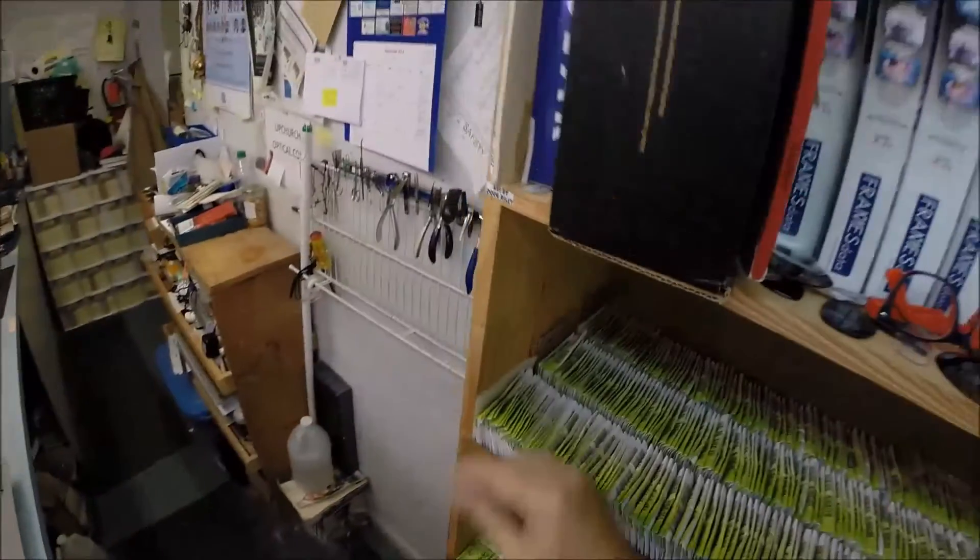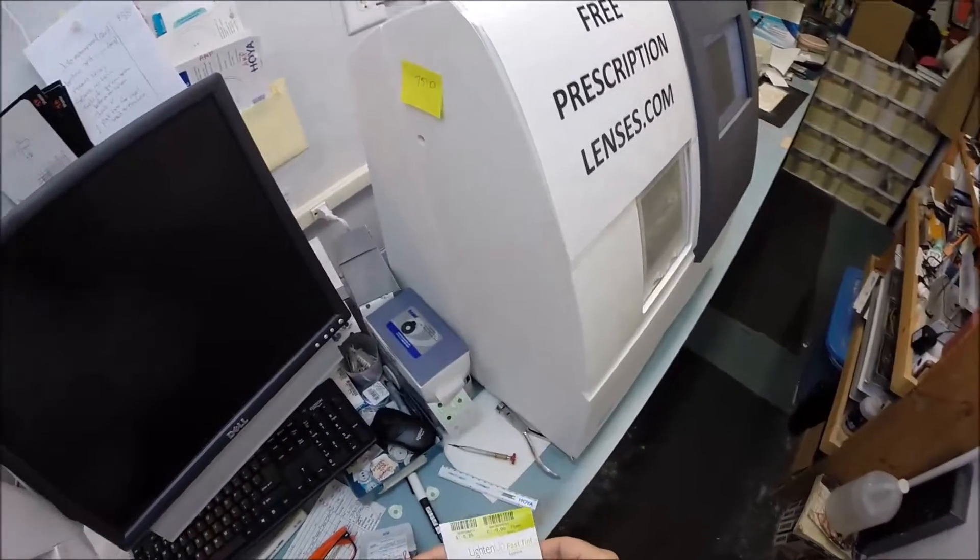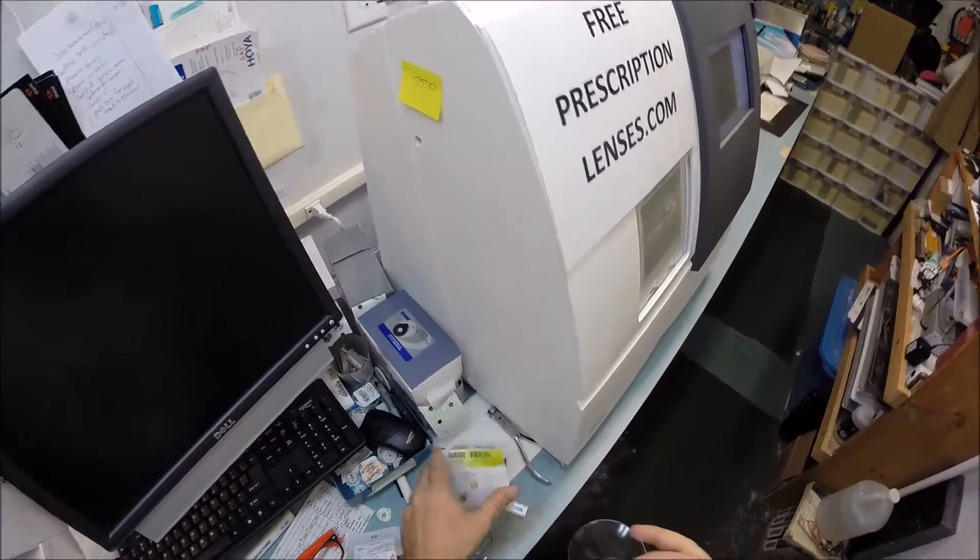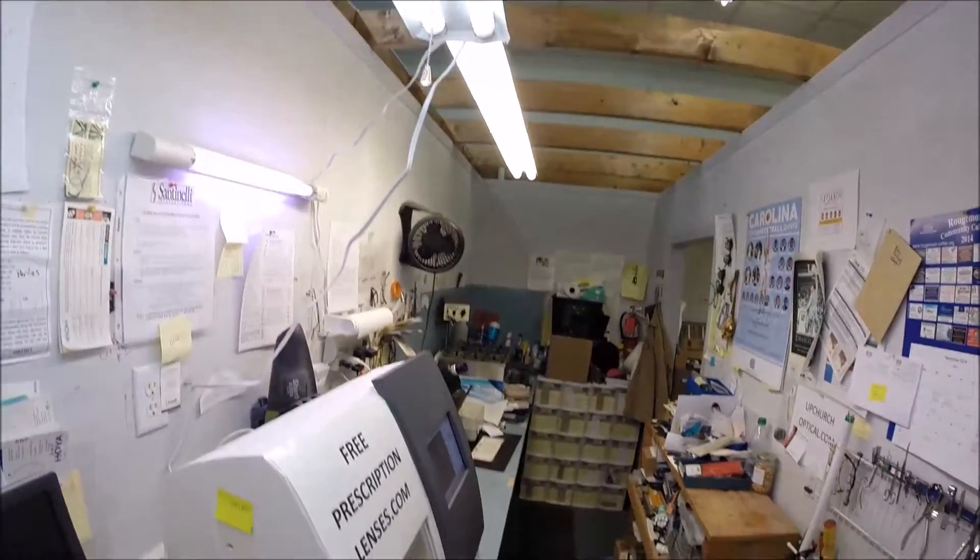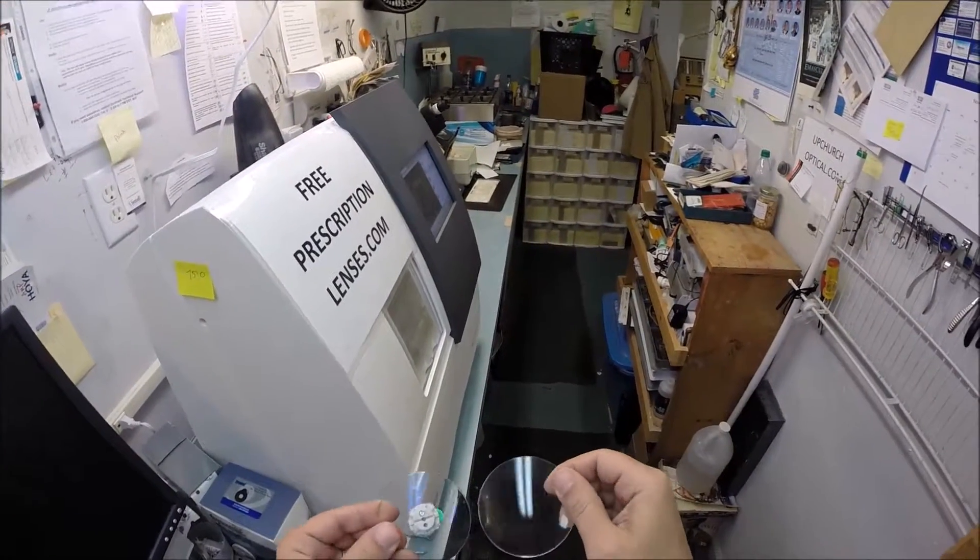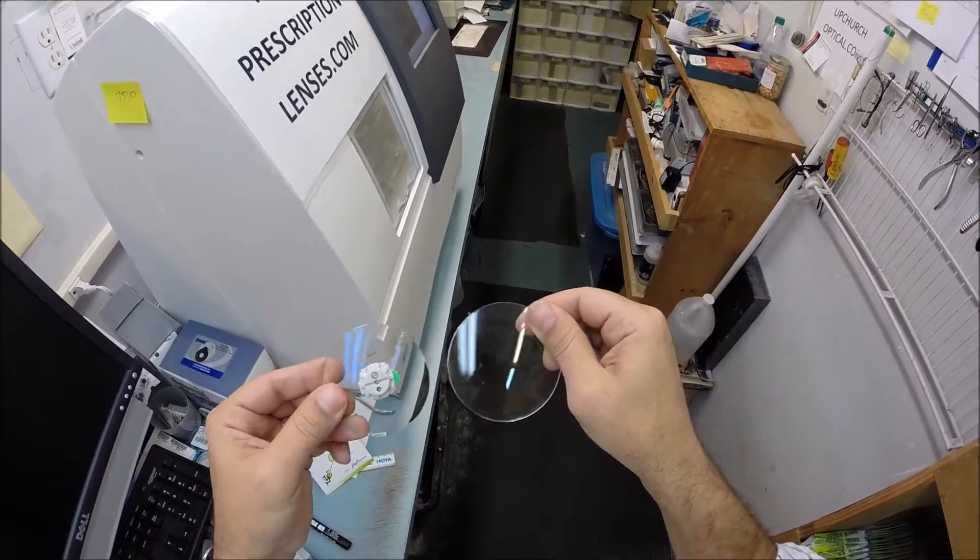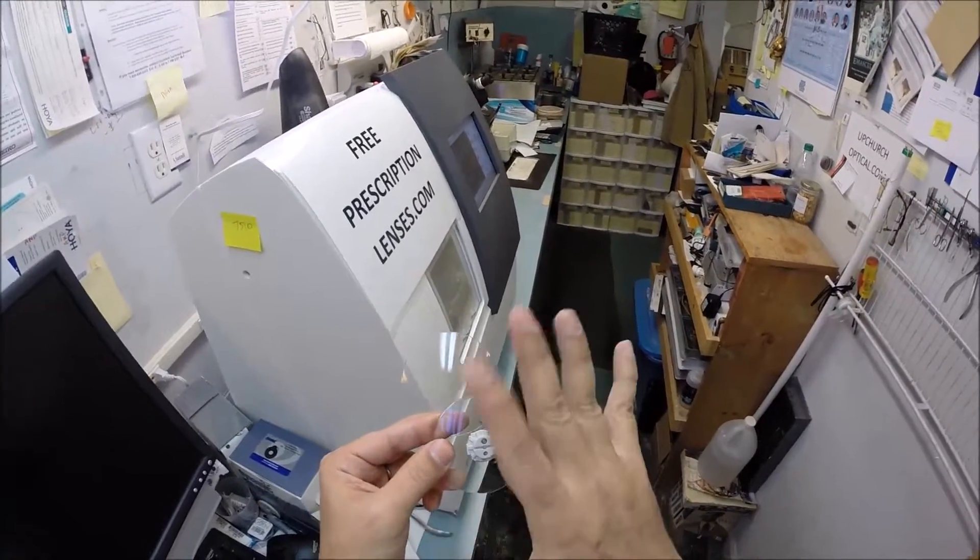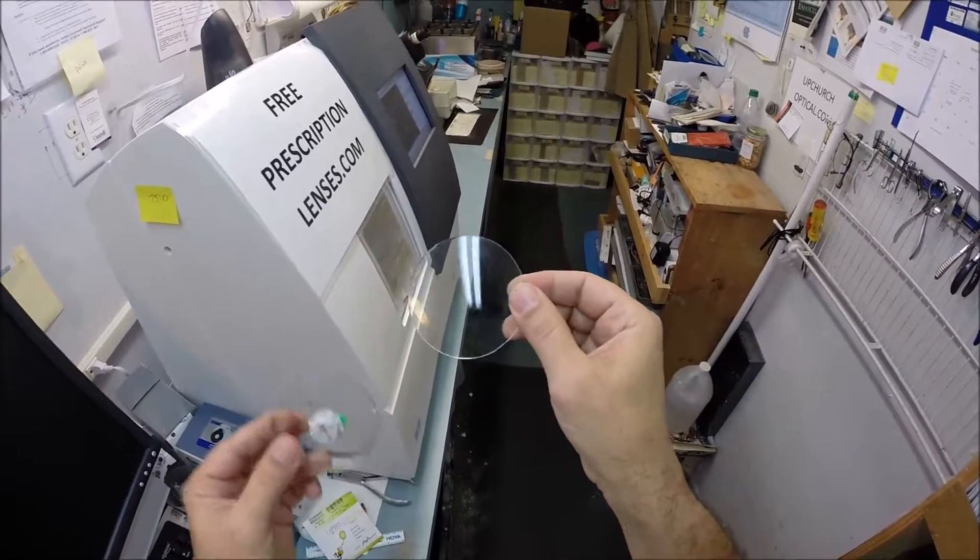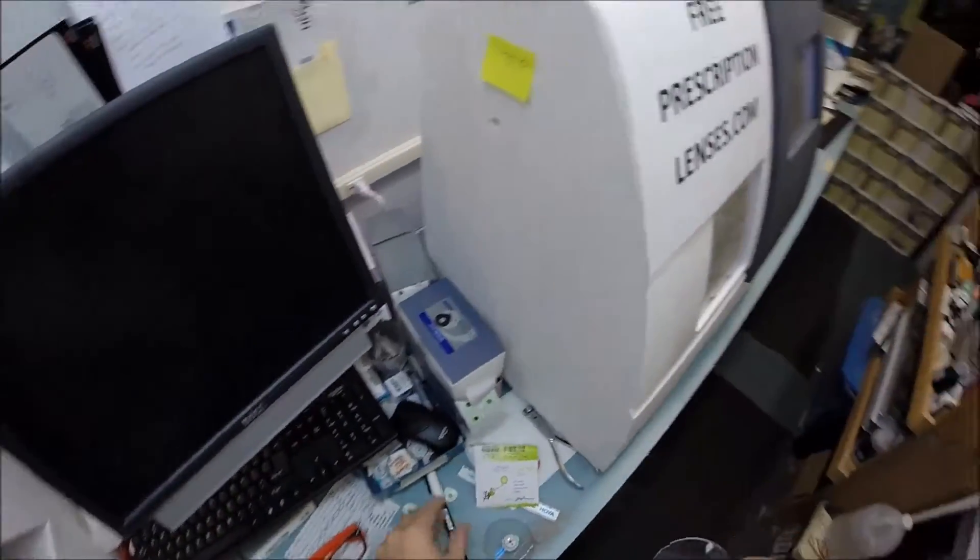These lenses are the Transition 7 gray lenses with the Crizal Alize anti-glare coating. I'll show you what the transition does at the end. Anti-glare is actually three features in one. The first feature is that it eliminates glare while driving at night, particularly in the rain, but from streetlights, stoplights, computer screens, overhead fluorescent lights. The second feature is it's an anti-reflection lens, so when someone's looking at you, they're not looking at their reflection in your glasses.